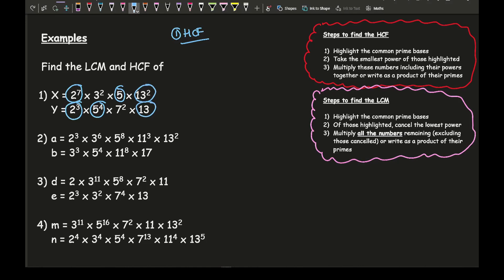Step two says to take the smallest power of those highlighted. Looking at the twos, the smallest power is three. Looking at the fives, the smallest power is one. Looking at the thirteens, the smallest power is thirteen to the power of one. So the HCF in index form is 2³ × 5 × 13. If I work that out, it's eight times five times thirteen which is 520. In an exam they will specify whether they want the answer as a product of primes or as an integer.